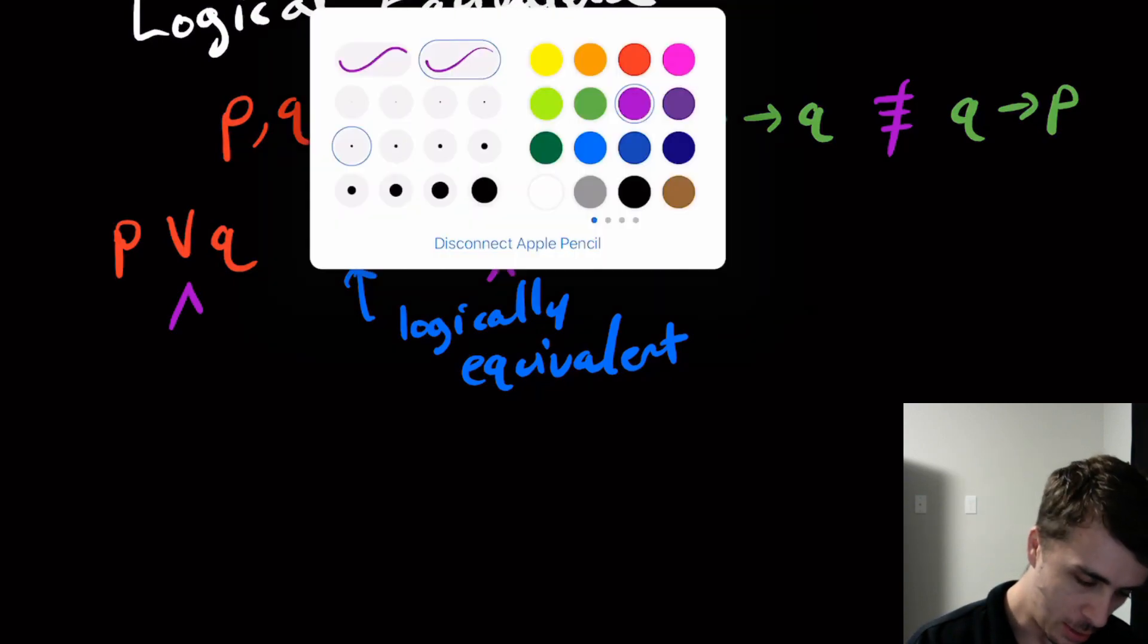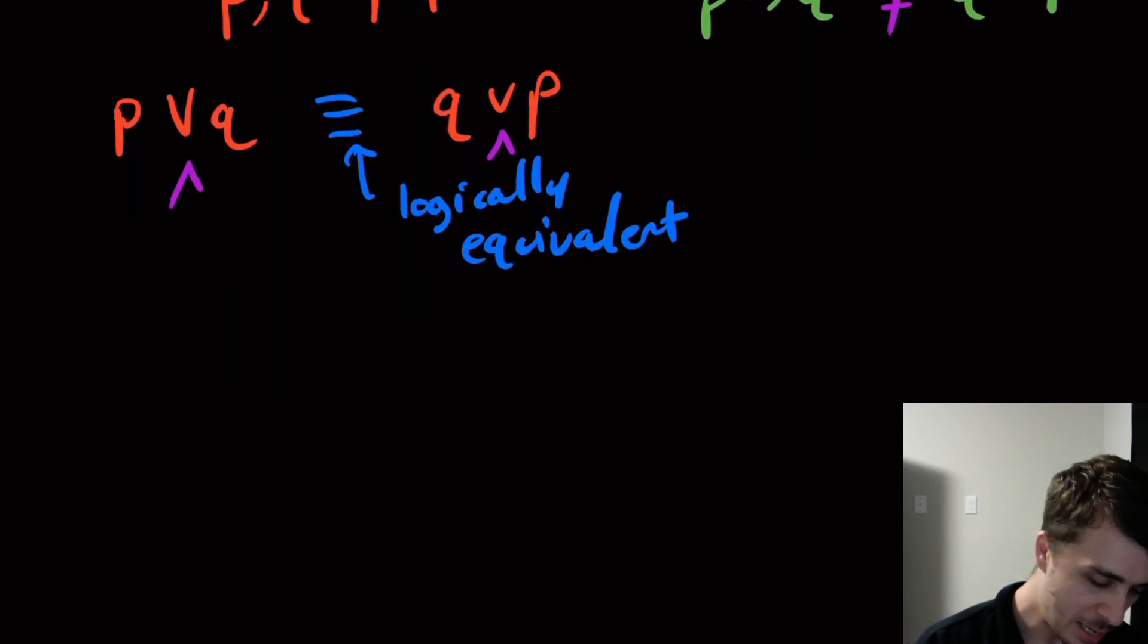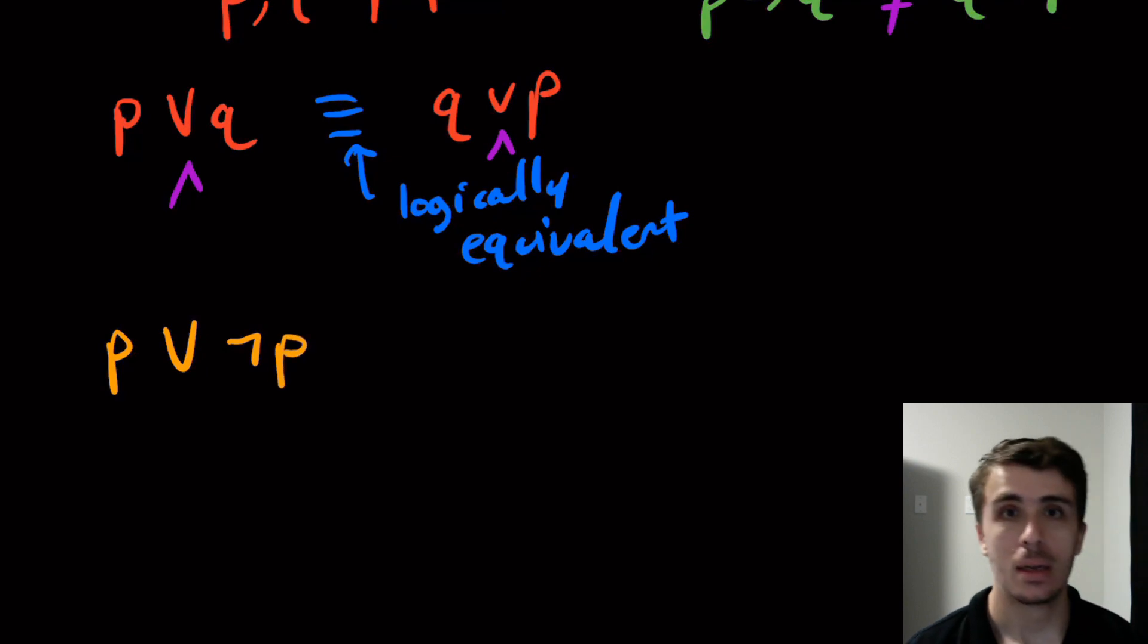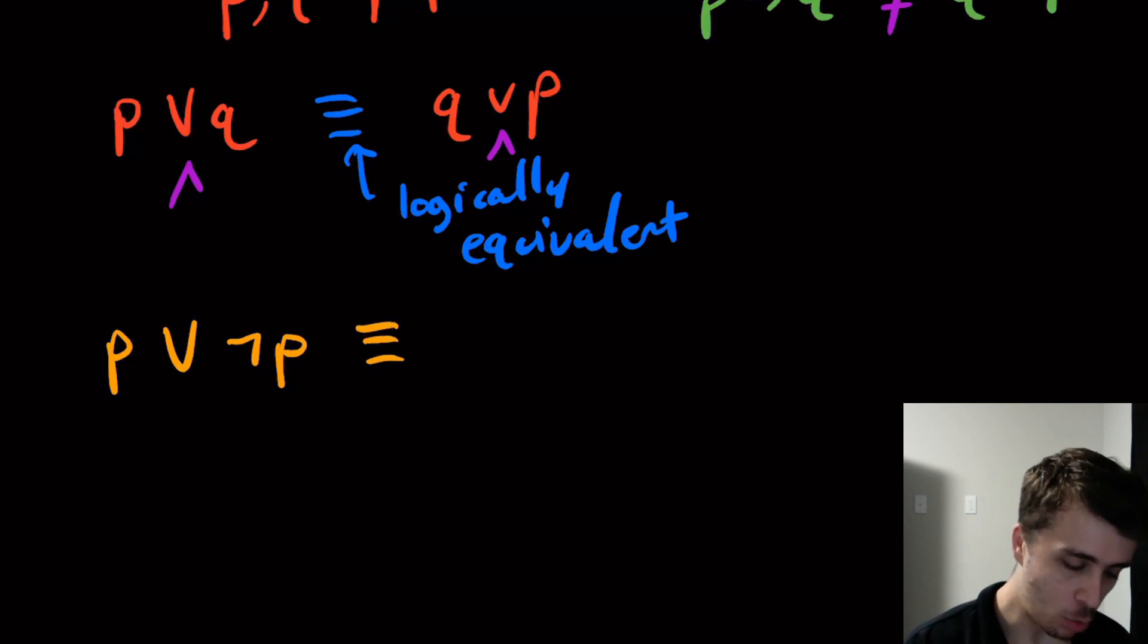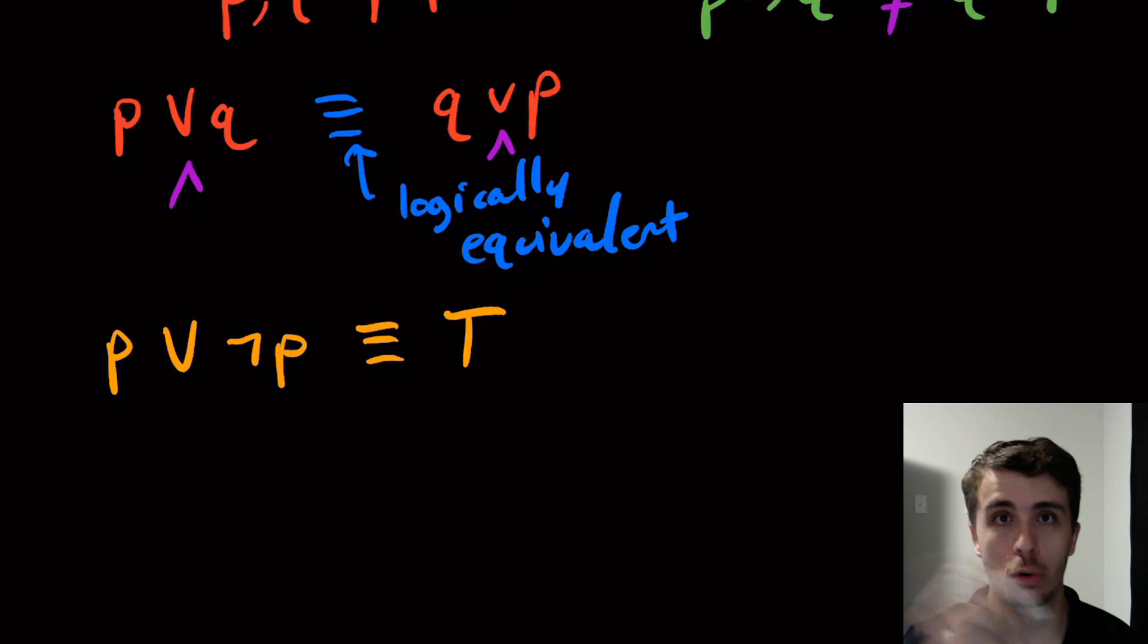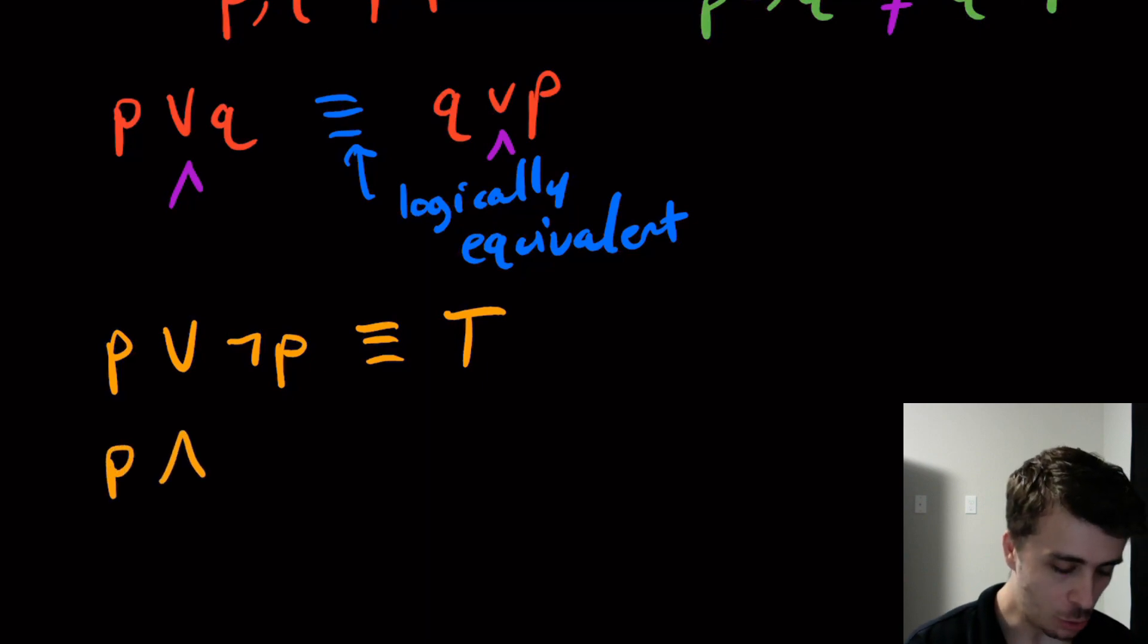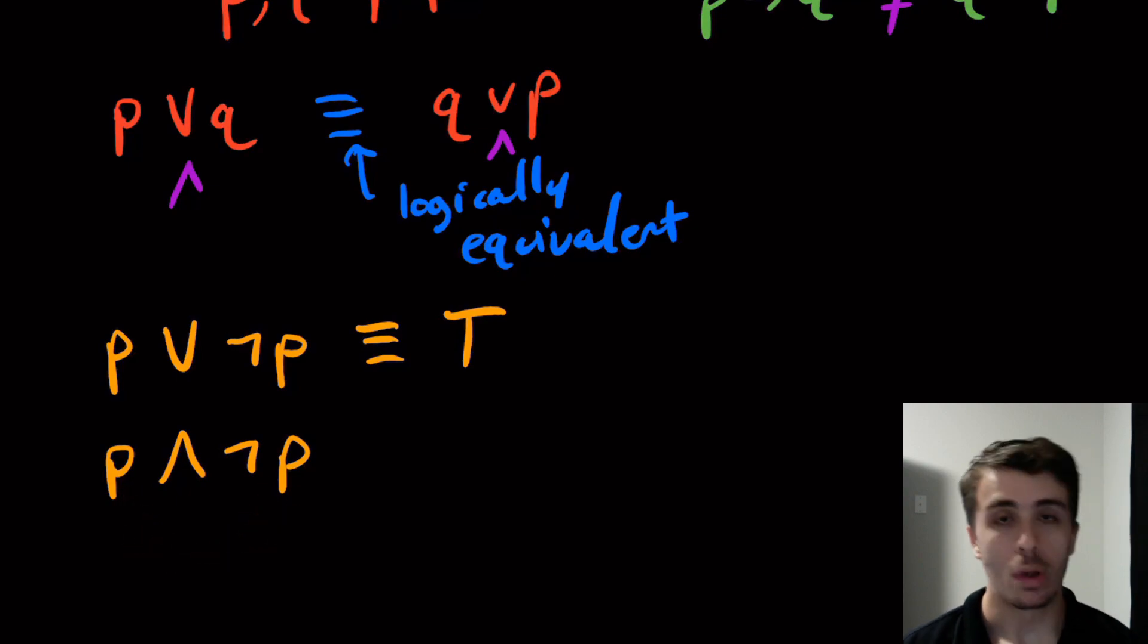So one thing that you can see pretty clearly is if I have P or not P, to be or not to be, no matter what happens, whether P is true or false, one of these two is in fact true. So this is actually logically equivalent to true. Because no matter what I do, these two, the or of true and false is true. And the same thing, if I do and of P and not P, well here one of the two is false. I don't know which one, but one of the two is always false. So anything and false, or the other way around, is always going to result in false. So this is going to be logically equivalent to false.